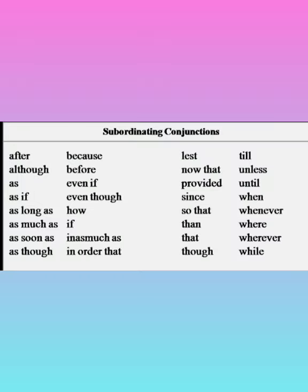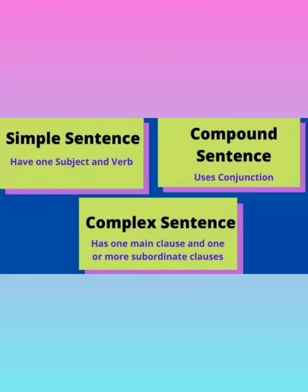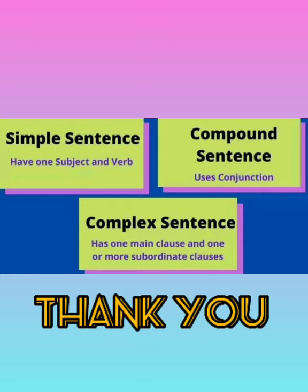Toh humein ek main clause rakhna hoga. Co-ordinating conjunctions ki list jaanne ke liye aapko clause topic ko achhe se padhna hoga. Jab aap clause ko achhe se padh lenge, tab aap in sab ko achhe se samajh payenge.